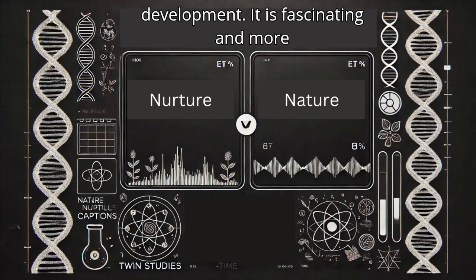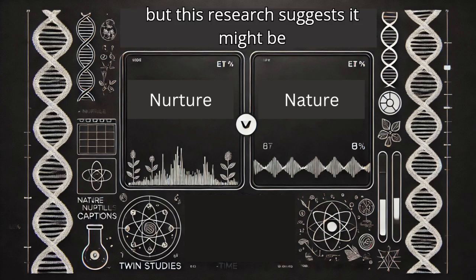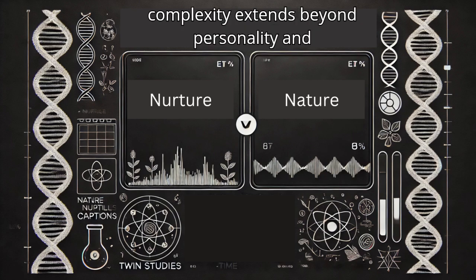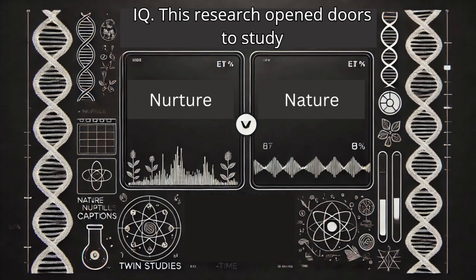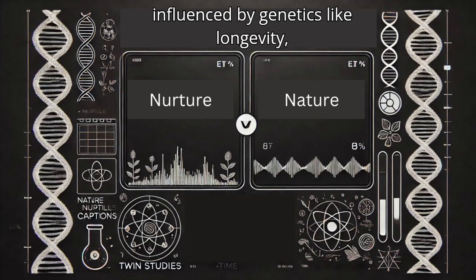It pushed the conversation forward and forced a deeper look at how we understand human development. It is fascinating and more than a little humbling. We like to think we're fully in control of our destinies, but this research suggests it might be more complicated than that. And this complexity extends beyond personality and IQ. This research opened doors to study other aspects of our lives potentially influenced by genetics, like longevity, relationships, and even things like predisposition to certain health conditions.